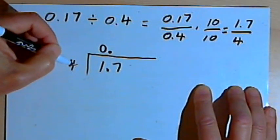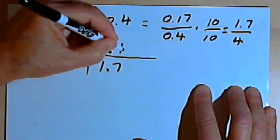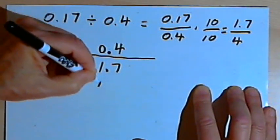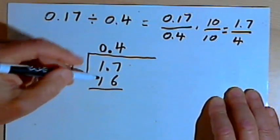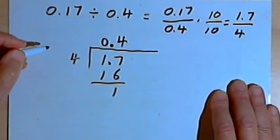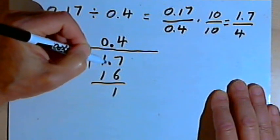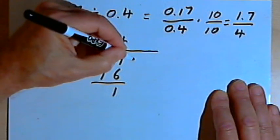Now I'm going to try to divide 4 into 17. 4 goes into 17 four times, and 4 times 4 is 16. I'm going to subtract 17 minus 16 is 1. And this is where I would normally bring down the next digit. Well, I haven't got another digit. What I've got is 1.7. But realize that 1.7 is the same as 1.70.